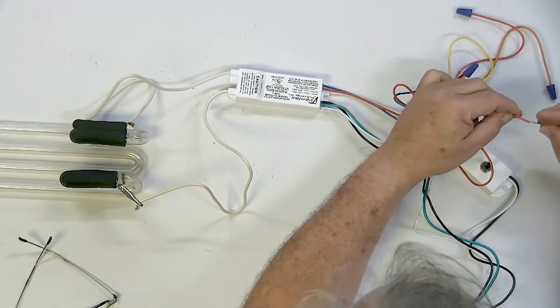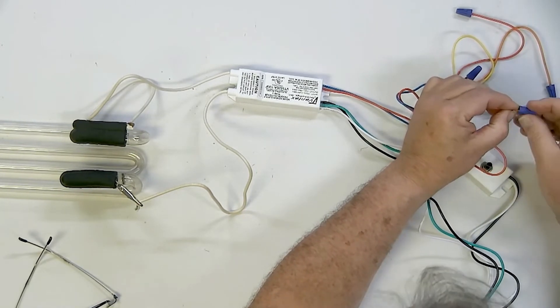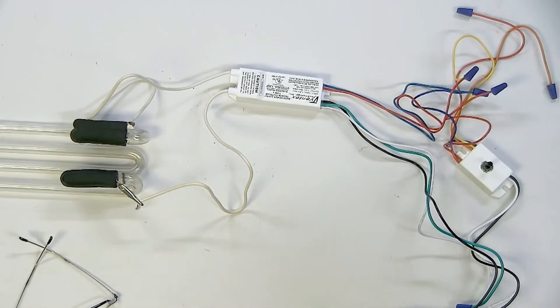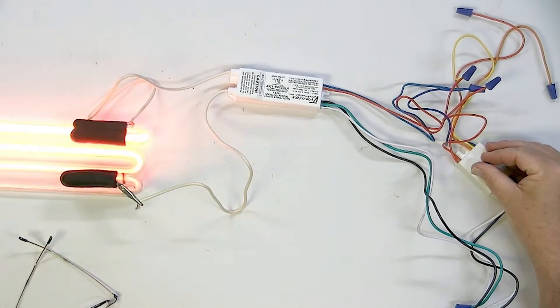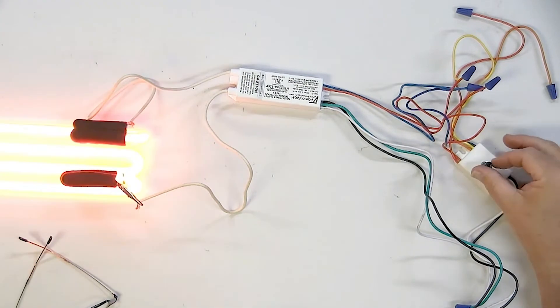Cap off the other one, the dimmer we were just using. Turn the power back on, and now the controller acts as a speed on the flasher. So, it's either flashing slow or it's flashing rapidly using the same controller.